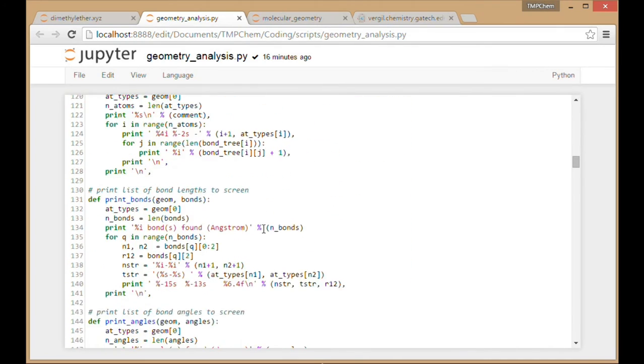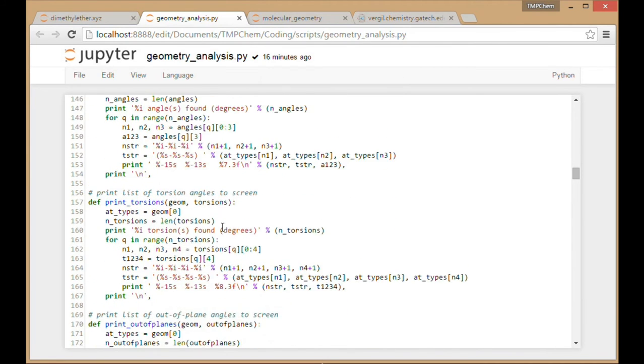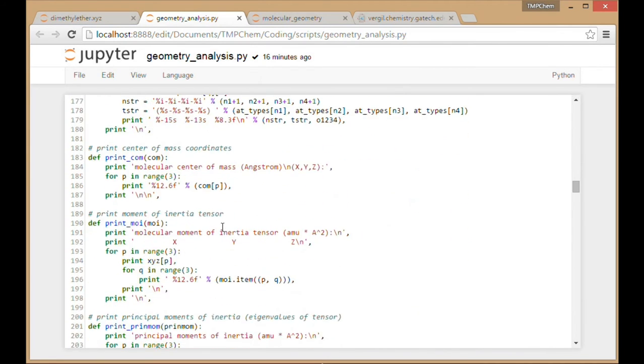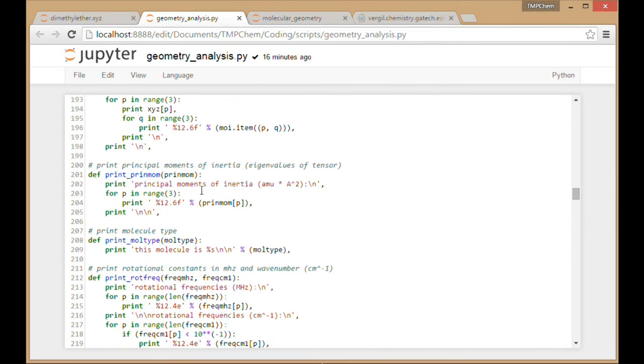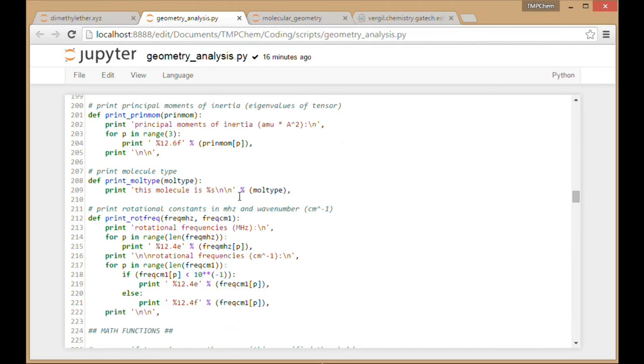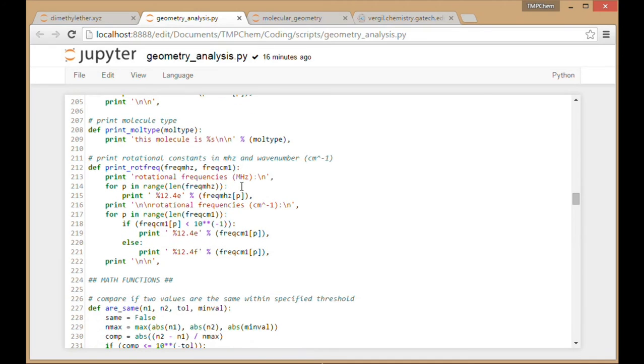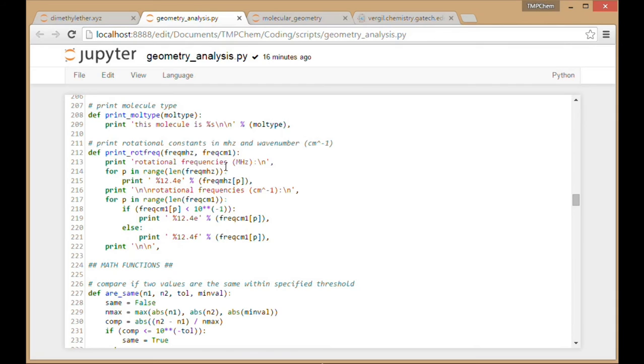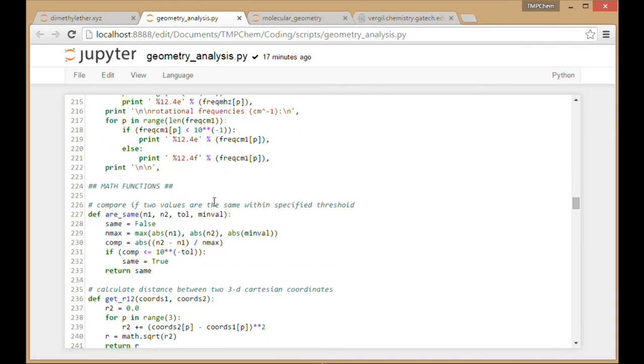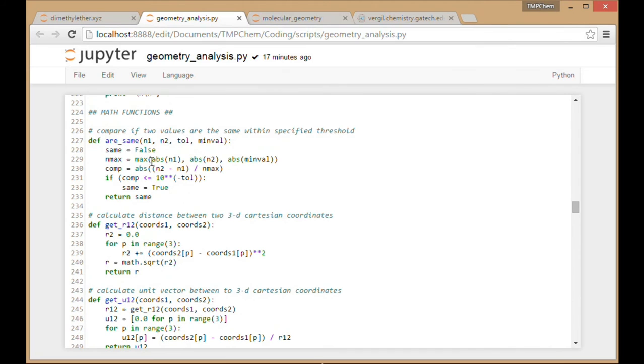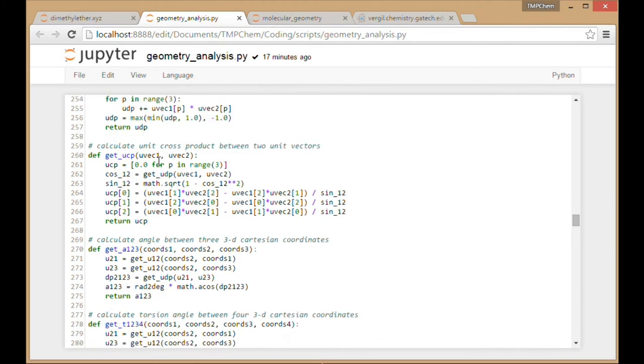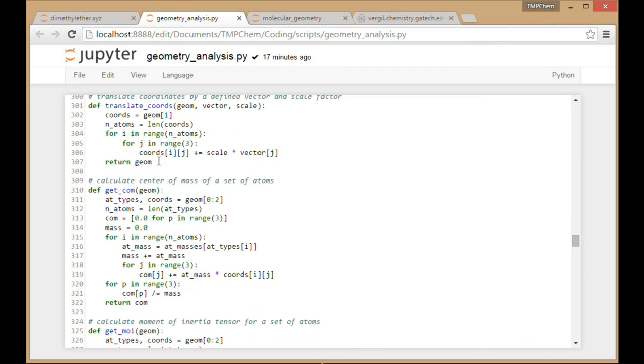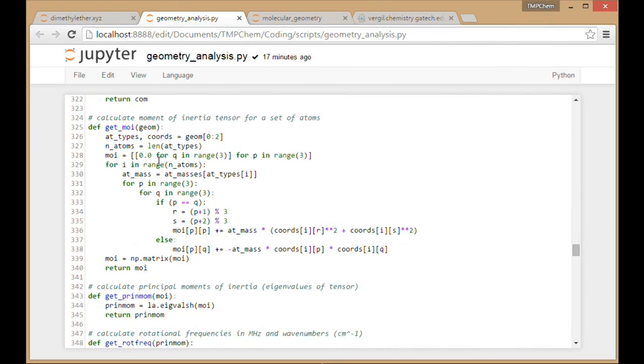Everything else seems to be the same thus far. Scrolling down. Print the principal moments, the eigenvalues of the moment of inertia tensor. What type the molecule is. I determine spherical top, symmetric, asymmetric, etc. Printing the rotational frequencies in megahertz and in wave numbers. Criterion for whether the values are the same or not.